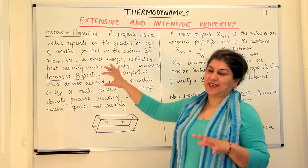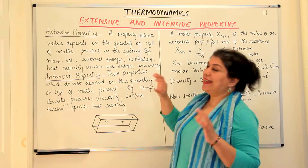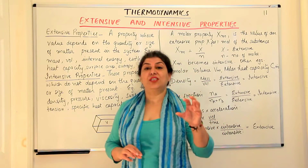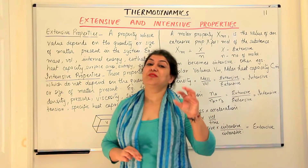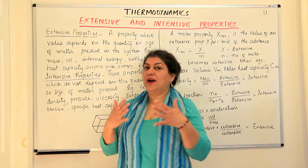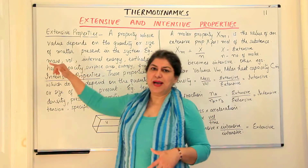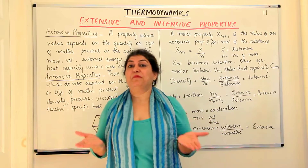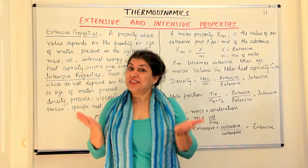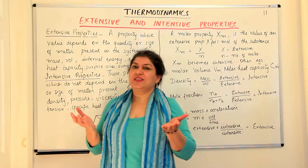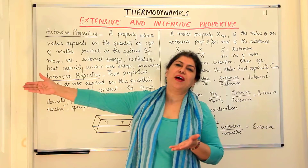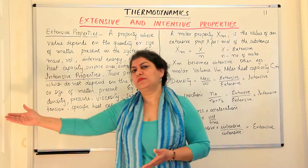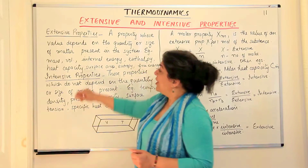Extensive properties are those properties that depend on the quantity of the substance present. For example, mass — I have a lot of substance in me, therefore my mass is high, and someone who has nothing in him, no fat, nothing, is like a skeleton — obviously his mass is less.